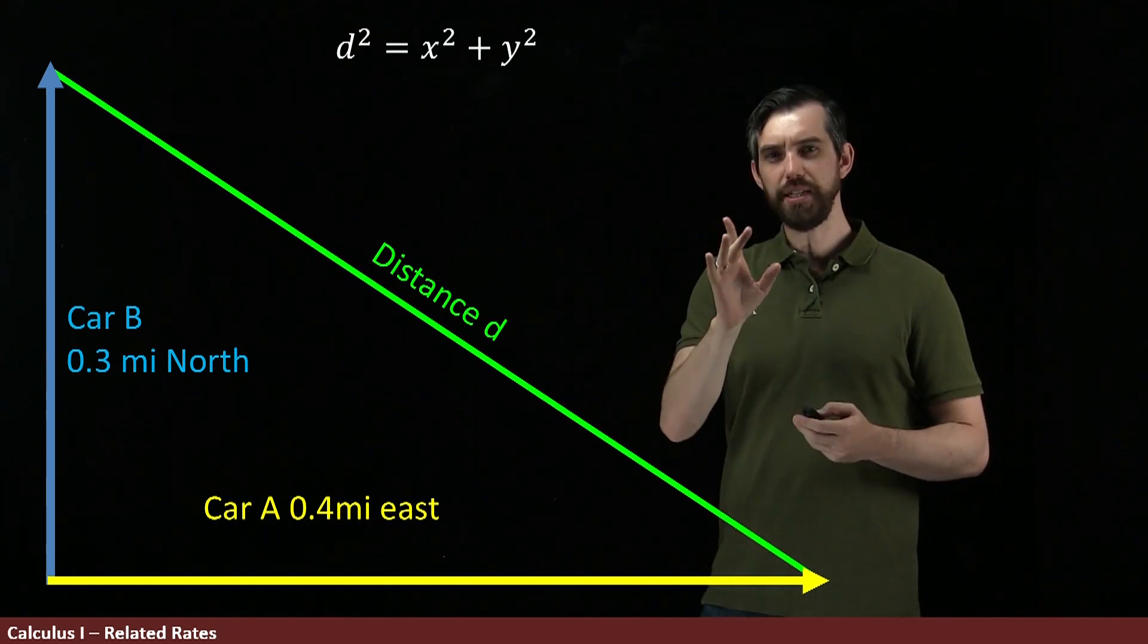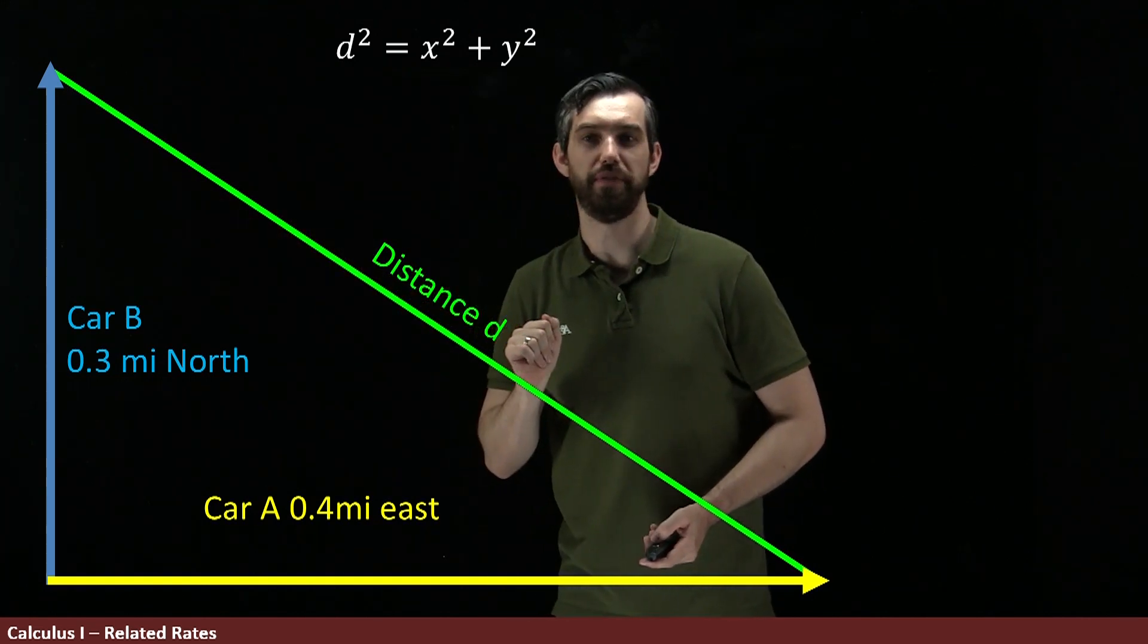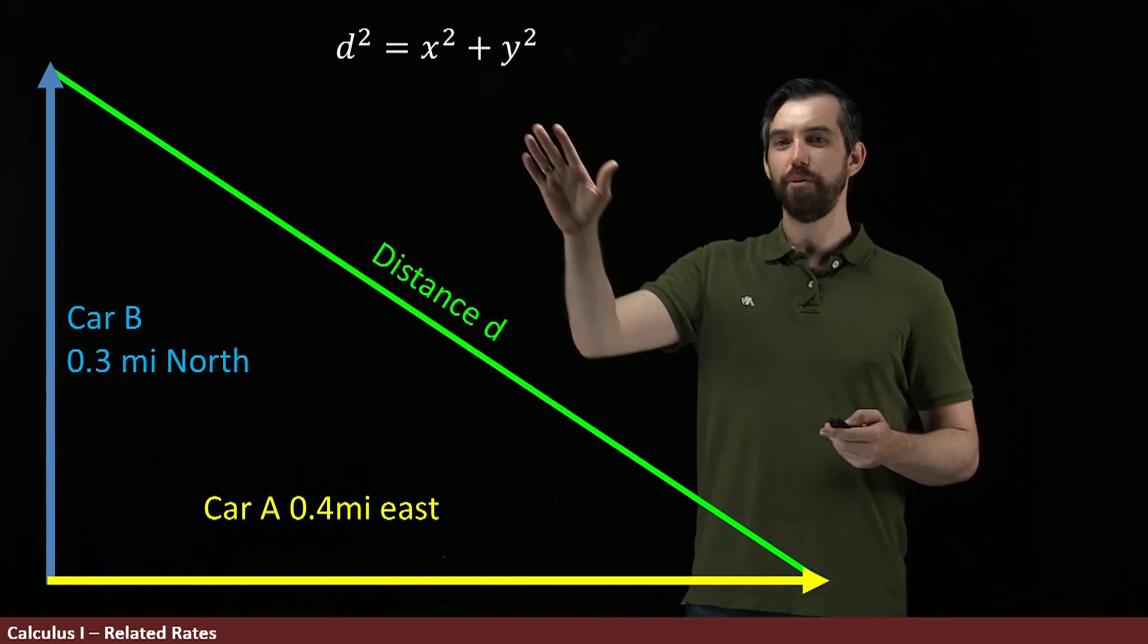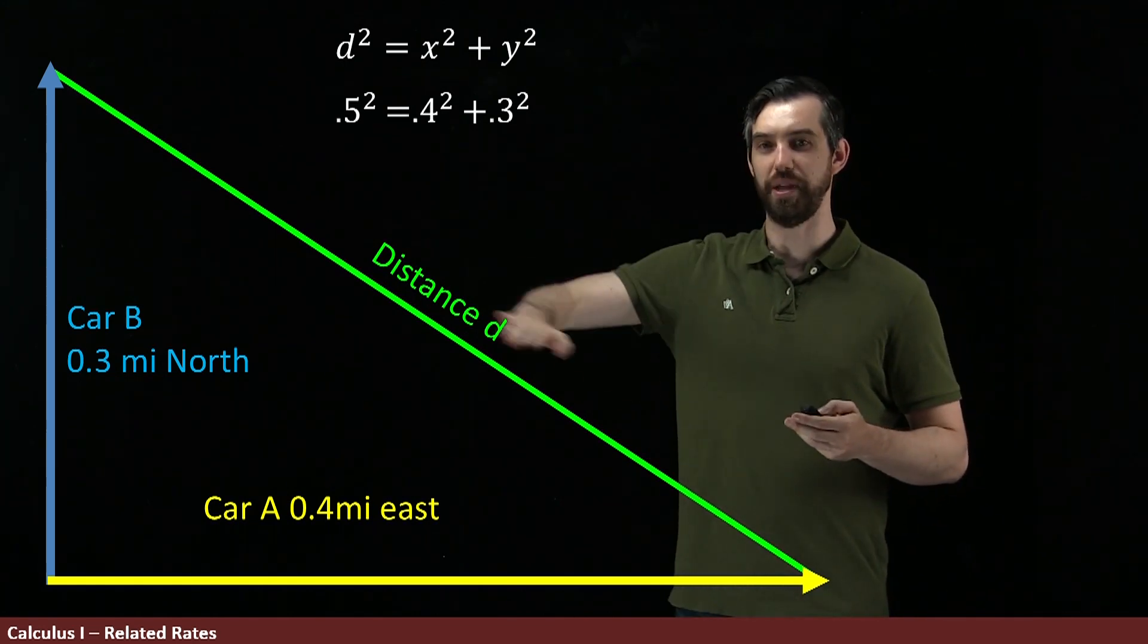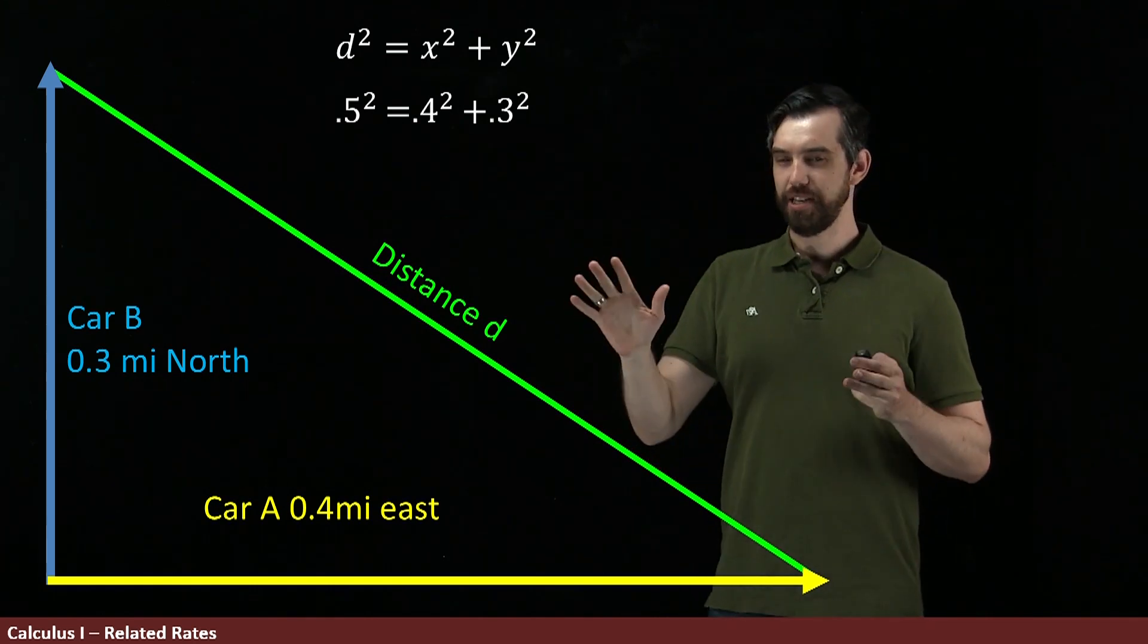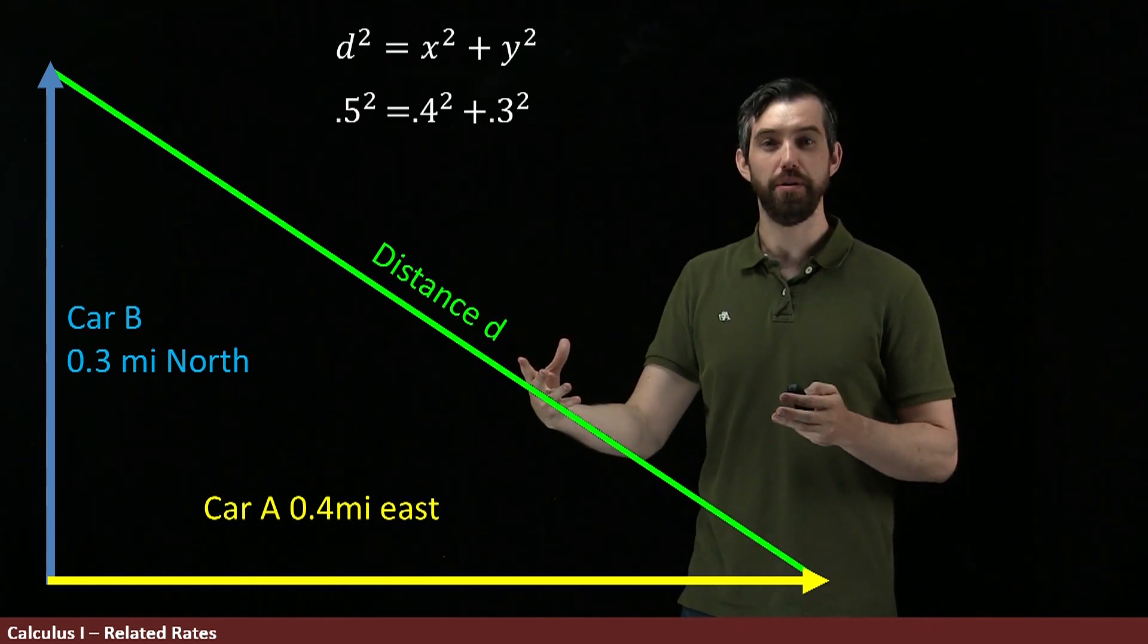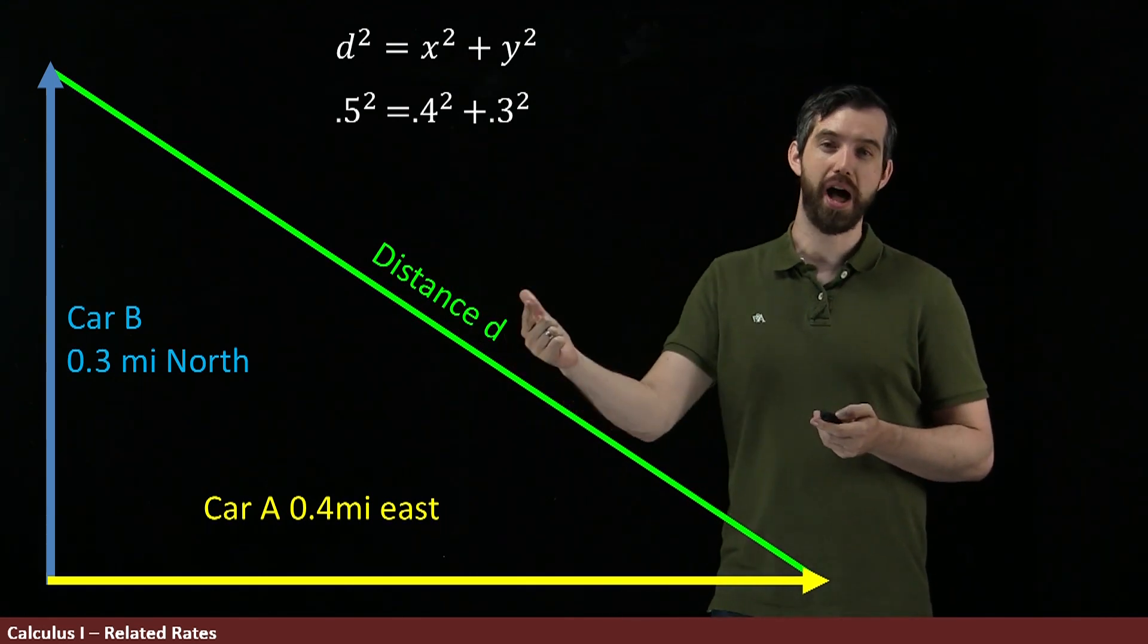So this is just the Pythagorean relationship between these three different variables. And then since I know what car A has driven, the 0.4 miles, and I know what car B has driven, the 0.3 miles, I can plug those numbers into my equation, and I can get that the distance between them is going to be a half mile. All right, so this expressed the relationship, but not amongst the rates, amongst the original quantities, the x, the y, and the d.